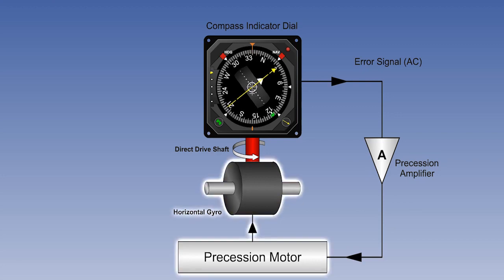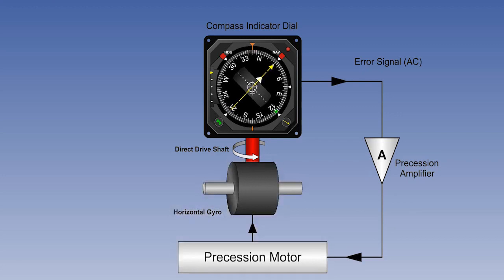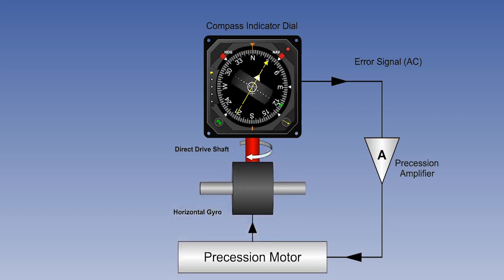The DC signal drives the precession motor, which turns the gyro. This gyro output is fed via the direct drive shaft to the HSI, for comparison with the flux valve signal. If the two are aligned, the compass is synchronised, and no further action takes place. If not, the error correction continues until the compass is synchronised.